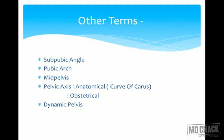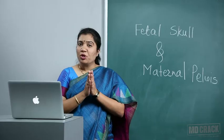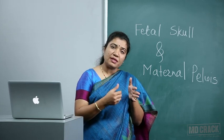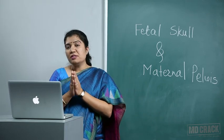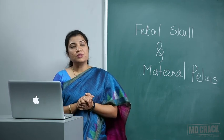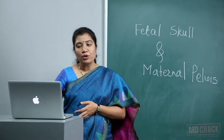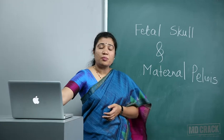Other important terminologies: subpubic angle is the angle below symphysis pubis. Dynamic pelvis refers to the fact that during labor, the pelvic joints can stretch by a few millimeters, increasing diameters slightly as the baby passes through. Even the coccyx can get pushed forward. That is why it is termed dynamic pelvis. This concludes the revision of maternal pelvis and fetal skull.